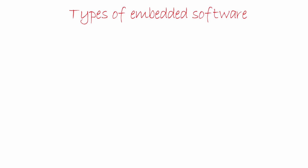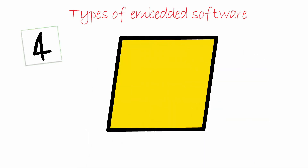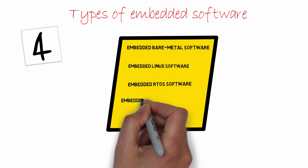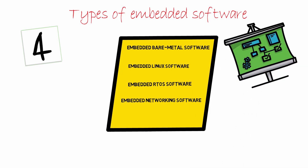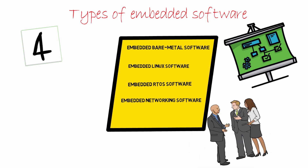Embedded software can be broadly classified into four types: embedded bare metal software, embedded Linux software, embedded RTOS software, and embedded networking software. These different embedded software types need specific skills. Big companies often hire engineers who are experts in one of these skill sets, while small companies need engineers who are a jack of all the above-mentioned traits.